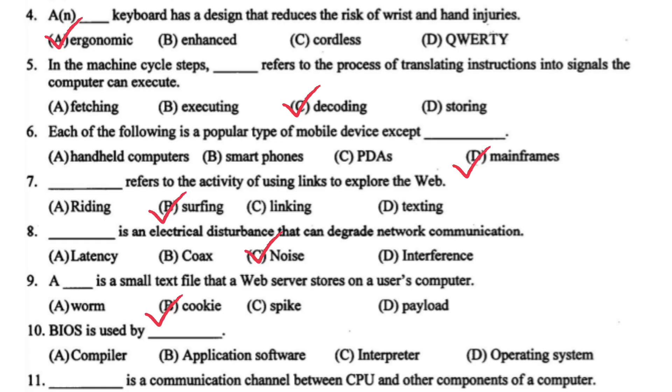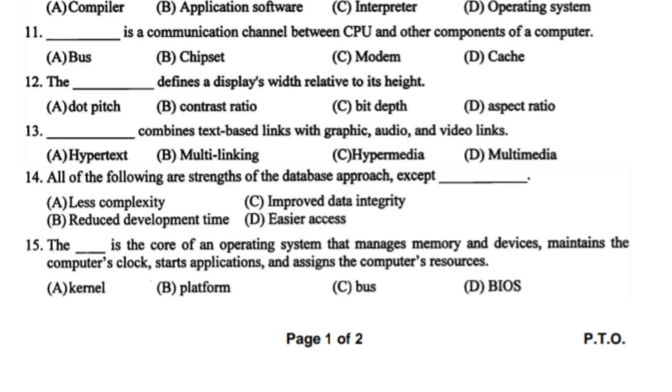BIOS is used by the operating system. Bus is a communication channel between CPU and other components of a computer. Aspect ratio defines display width relative to its length. Hypermedia combines space link with graphics, audio, and video link. All of the following are strengths of database approach except less complexity. The kernel is the core of an operating system that manages memory and devices, maintains computer clock, starts applications, and assigns computer resources.